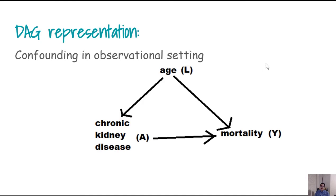How do we represent confounding using a DAG? If chronic kidney disease is the exposure and mortality is the outcome, a third variable that is a common cause of both exposure and outcome is generally known as a confounder. In DAG representation, if A is causing Y, then L is causing both A and Y — that is the representation of a confounder in a DAG.